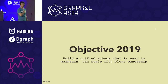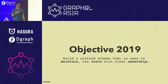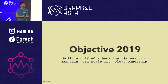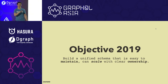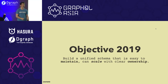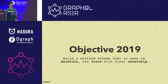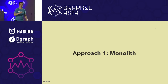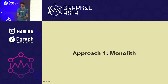So we decided to solve this in 2019, or at least find a way. The statement was: build a unified schema that's easy to maintain, can scale, with clear ownership. Maintainability, scale, and ownership are the key objectives we were trying to achieve. We're going to try different approaches to see if they solve the problem.